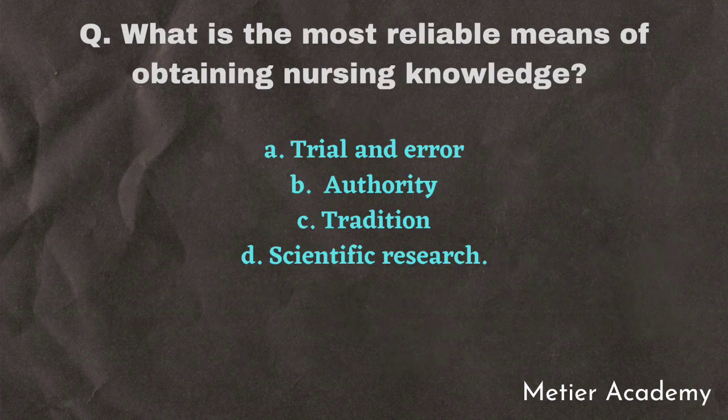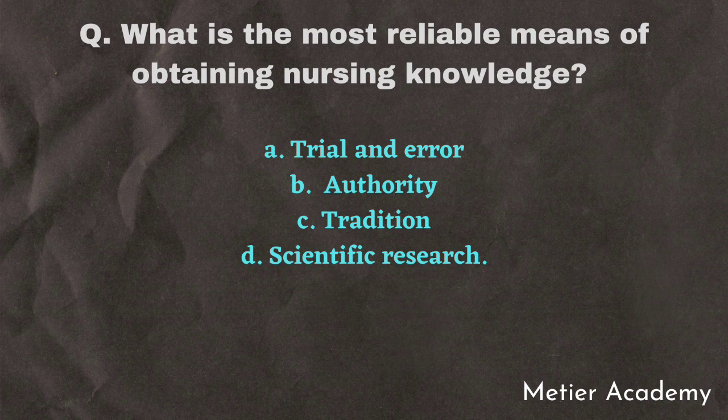The next question is: what is the most reliable means of obtaining nursing knowledge? Options are trial and error, authority, tradition, and scientific research. This question was asked in 2019 RRB toughness competitive exam. It is a direct question and the answer is Option D, scientific research.